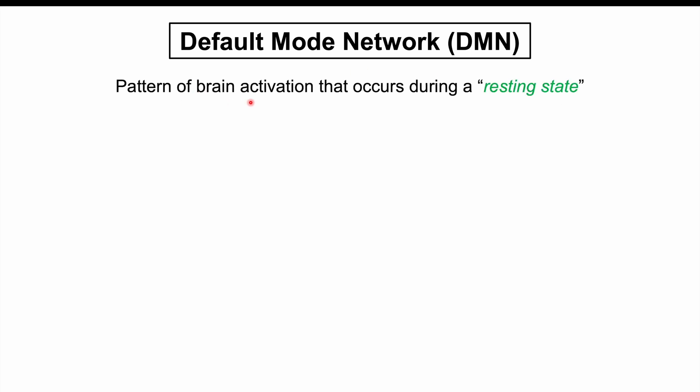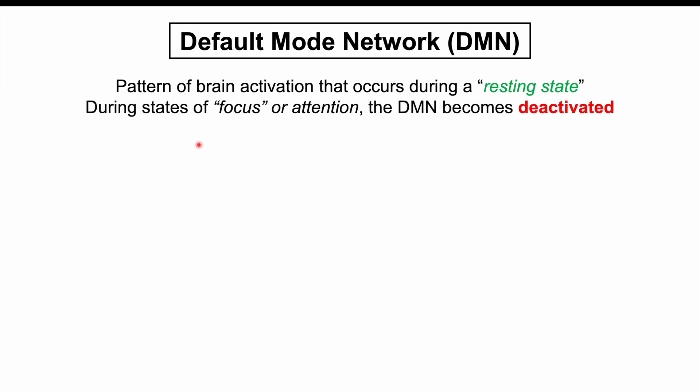The default mode network is a pattern of brain activation that occurs during a resting state — different brain structures that activate together when we're at rest. During states of focus or attention, the default mode network becomes deactivated. It was originally found accidentally in brain imaging studies where patients were doing cognitively stimulating activities, and researchers noticed this pattern of activation occurring during rest.